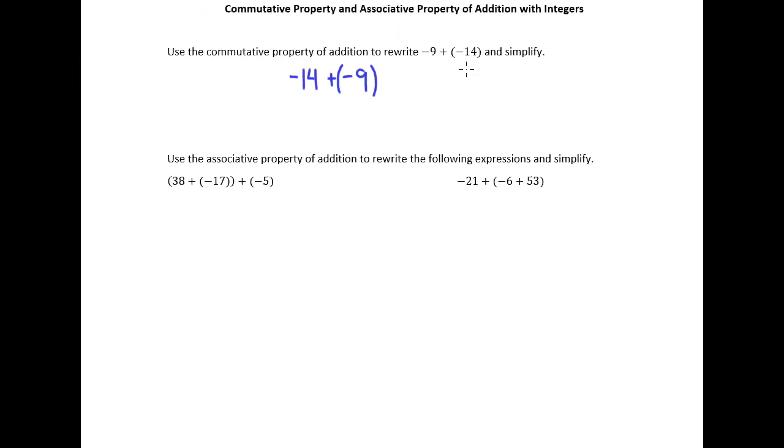Now since we're adding two numbers that have the same sign, we know we're just going to add their absolute values. So 14 plus 9, we get 23, but of course because both of these are negative, the answer is -23.